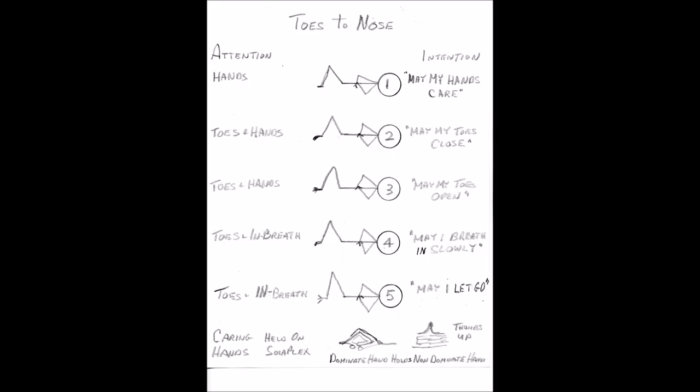And in the fifth stage, we can again have our attention on our toes and then on the out-breath. May I breathe in slowly and lowly, breathing down to our toes, opening our toes and letting go, just letting go on the out-breath. On the in-breath, we know the sensations that are in the body. And on the out-breath, we just let go.